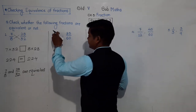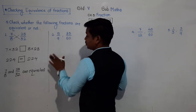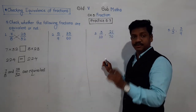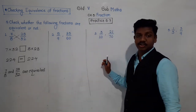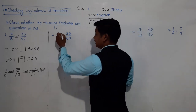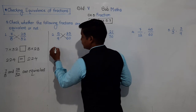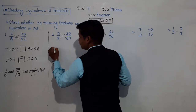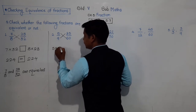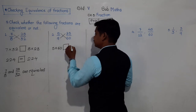Next example. The fractions are 5 upon 9 and 35 upon 60. We have to check whether they are equivalent or not. We are going to use the cross product method: 5 into 60 on one side, and 9 into 35 on the other.